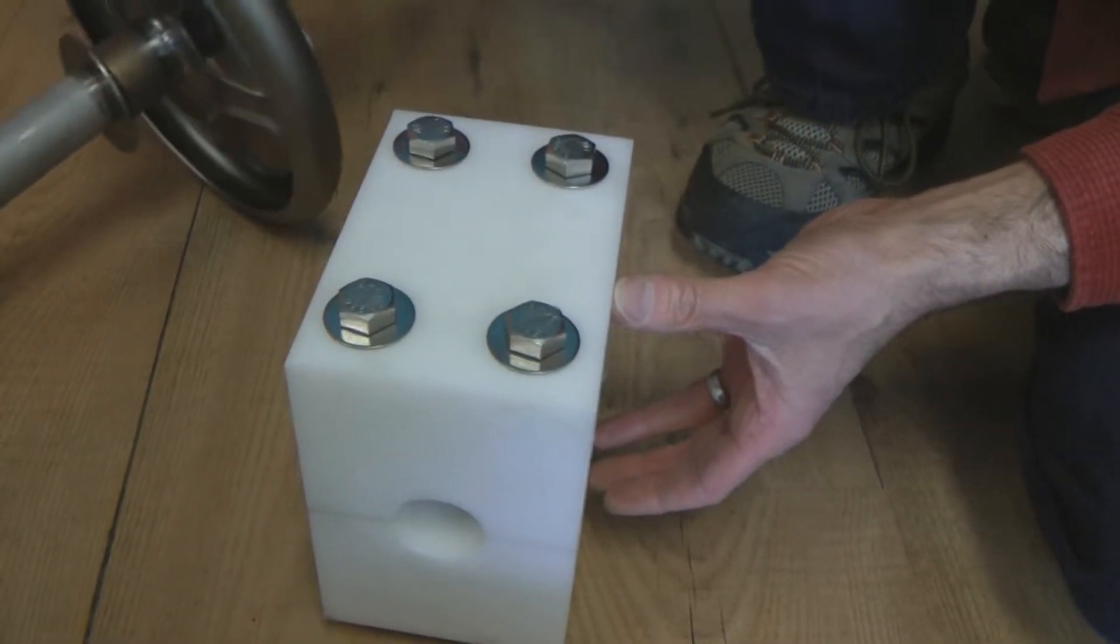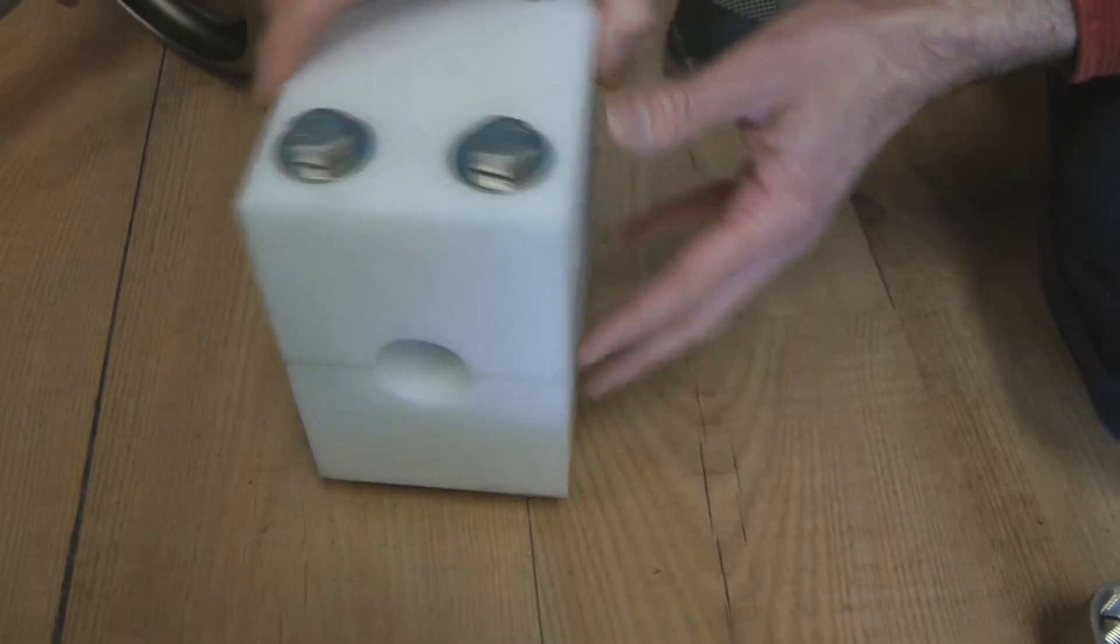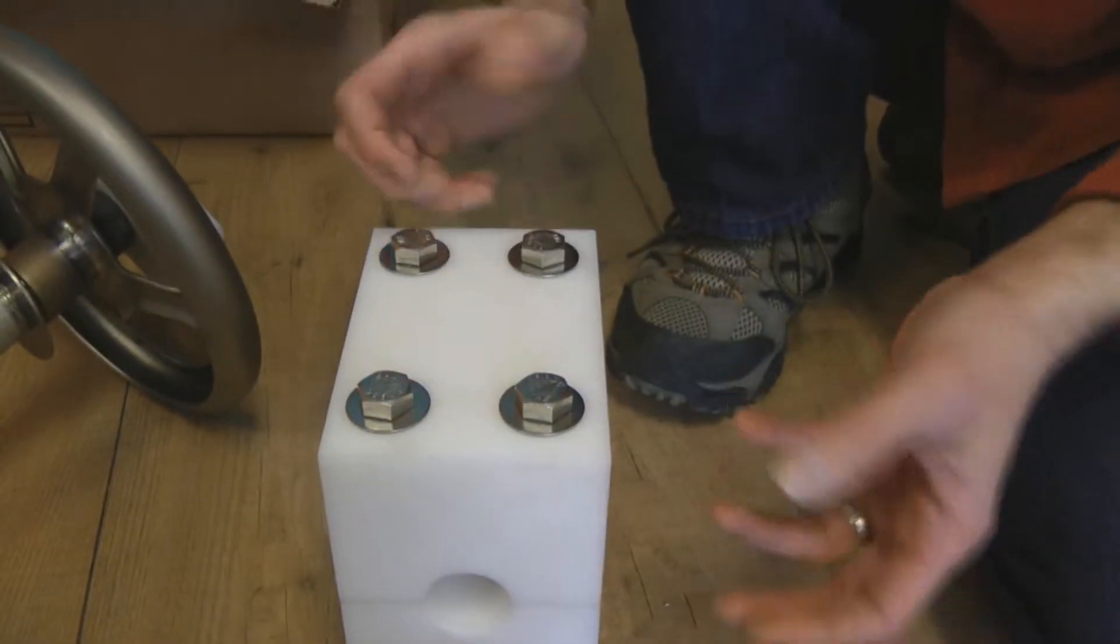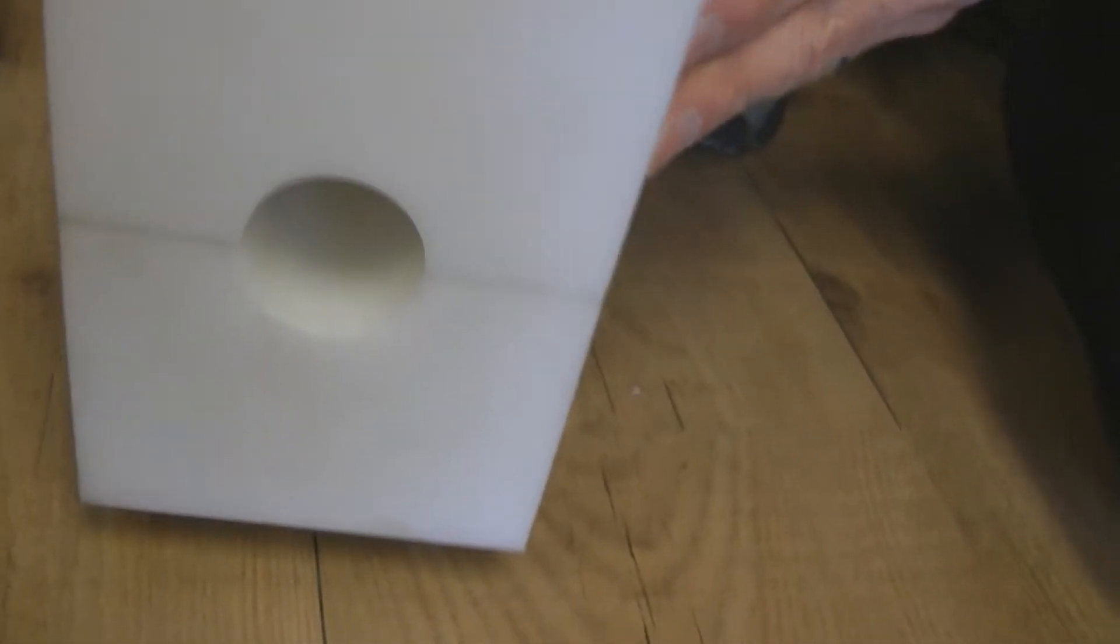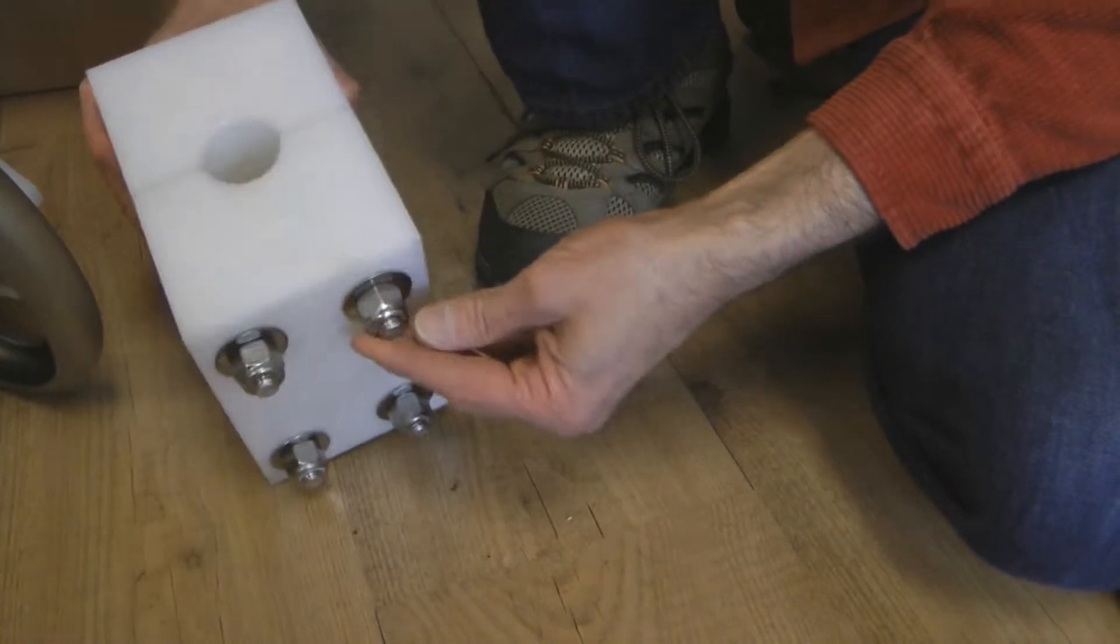So this piece here is what the customer then will attach some sort of bracket to fit on their boat. And since I don't know what their boat looks like, we just left this plane. But this then allows the whole unit to turn and it's nice and slippery inside here. This is called Delrin, is the brand name. Acetyl is the type of material.